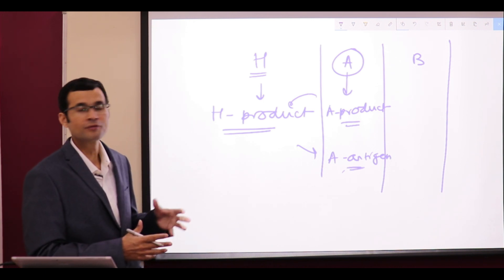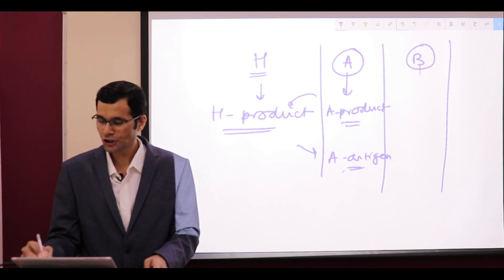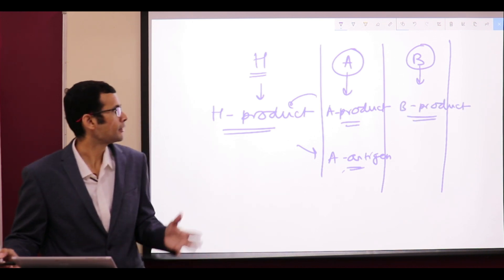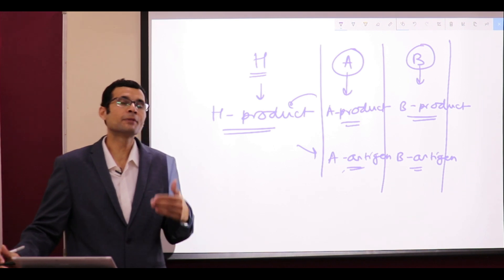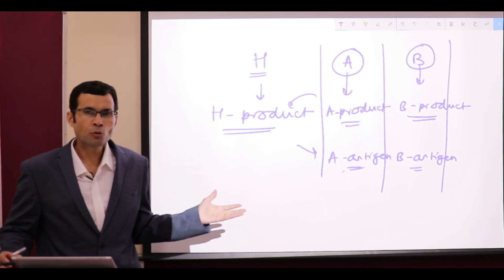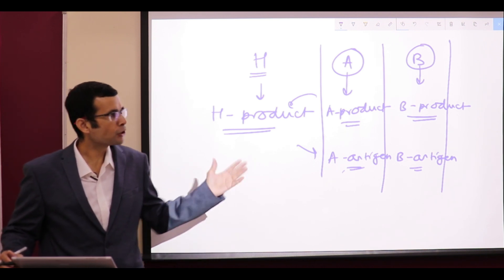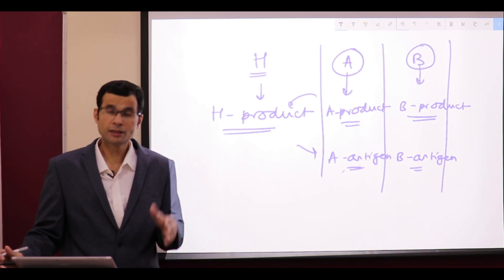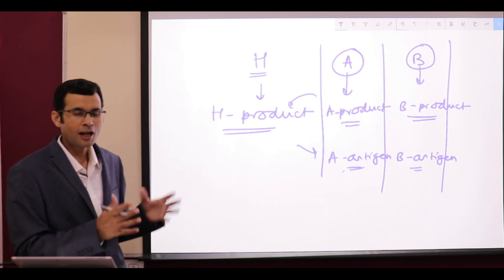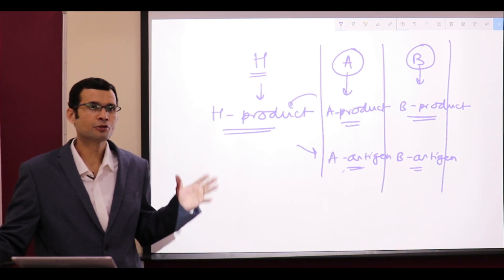The A gene product acts through the H product to form the A antigen on the red cell membrane, so the blood group of that individual would be A. Similarly, someone with the B gene dominant forms the B gene product, which acts through H product to form the B antigen. If both A and B antigens are present, neither gene is dominant, or if A and B genes are recessive, there would be no antigen and the blood group would be O. That is how the ABO blood group system categorizes the population into four blood groups.